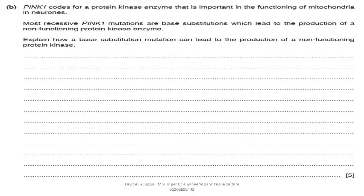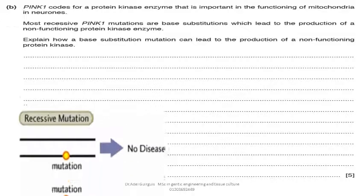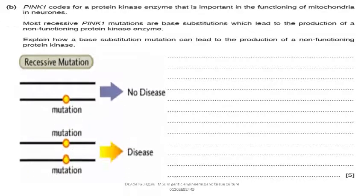Question B: PINK1 codes for a protein kinase enzyme that is important in the functioning of mitochondria in neurons. Most recessive PINK1 mutations are base substitutions which lead to the production of a non-functioning protein kinase enzyme. Explain how a base substitution mutation can lead to the production of a non-functioning protein kinase.